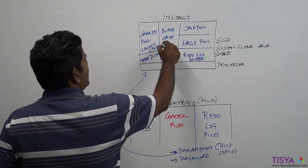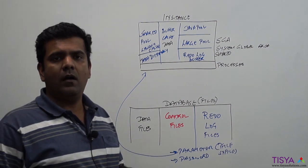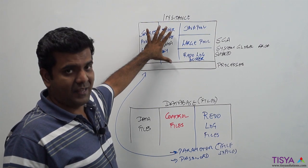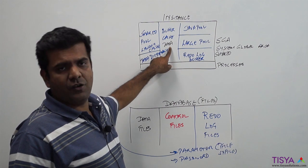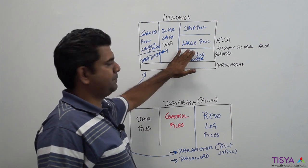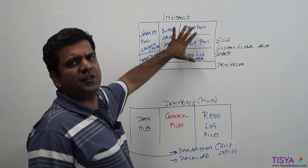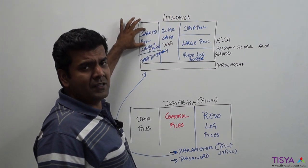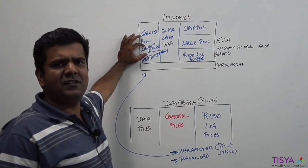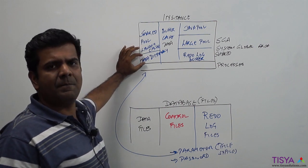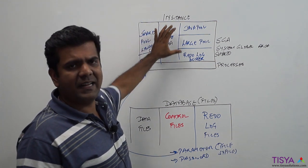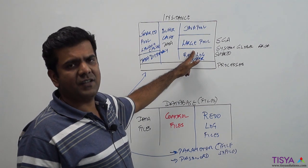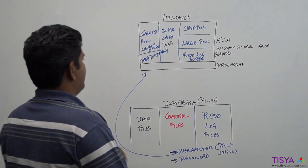The buffer cache contains whatever data you query upon. Any SQL that you run on your database will need to bring the data up from your data files into the buffer cache, where the processing happens. The redo log buffer — whenever you make a change to your data, entries are made in the redo log buffer. Large pool and java pool are components used for certain specific things — we will not get into those details now. So the primary components are: shared pool, buffer cache, and redo log buffer.